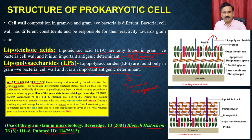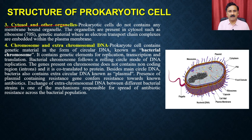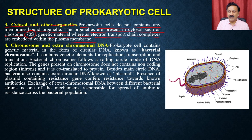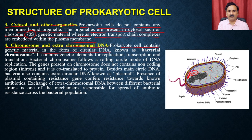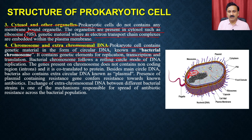Now let us move on to beyond the cell wall. Apart from the cell wall, prokaryotic cells have the cytosol and other organelles. Prokaryotic cells do not contain any membrane-bound organelles. The organelles present in the cytosol include the 70S ribosomes and the genetic material, whereas the electron transport chain and complexes are embedded within the plasma membrane. Apart from that, genomic material is present in the chromosome as well as in extra-chromosomal DNA.